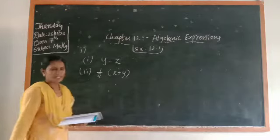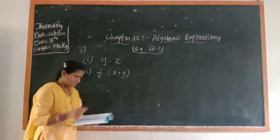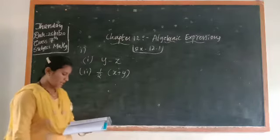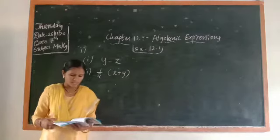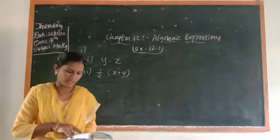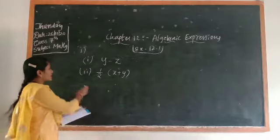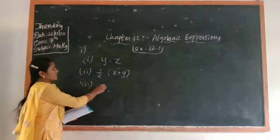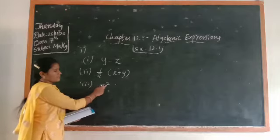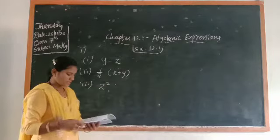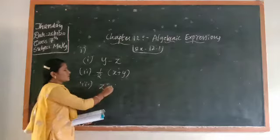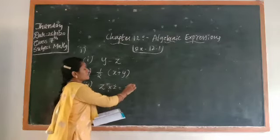From the word form you write the expression. Next: z multiplied by itself. Z multiplied by itself means z square. You are taking z times z, which gives z².